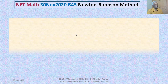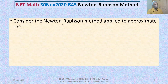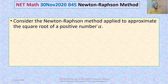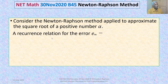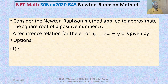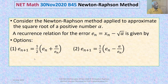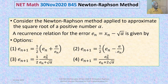The problem is: consider the Newton-Raphson method applied to approximate the square root of a positive number alpha. A recurrence relation for the error En = Xn minus square root of alpha is given, and four options provide a relation between En+1, En, and alpha.